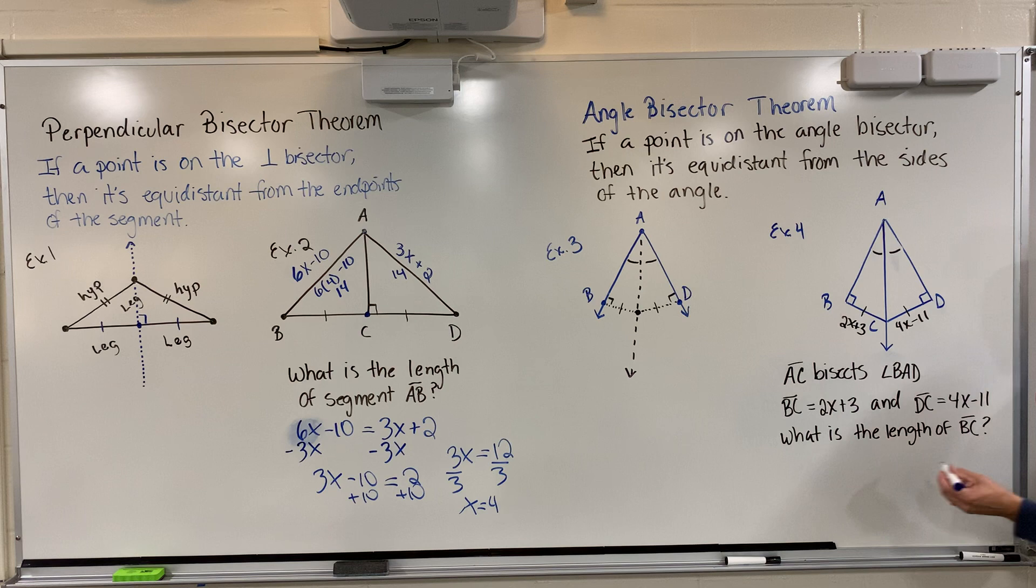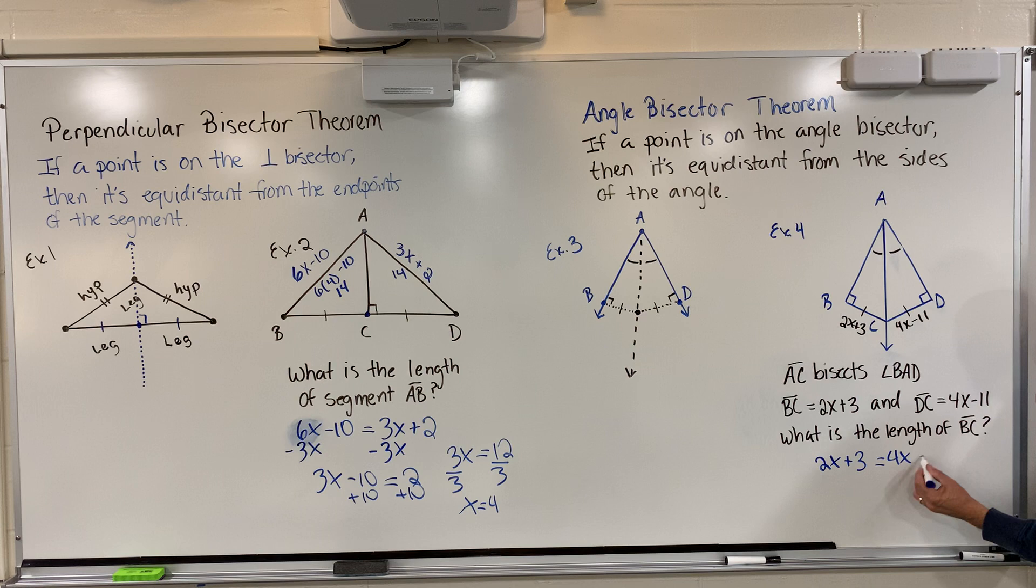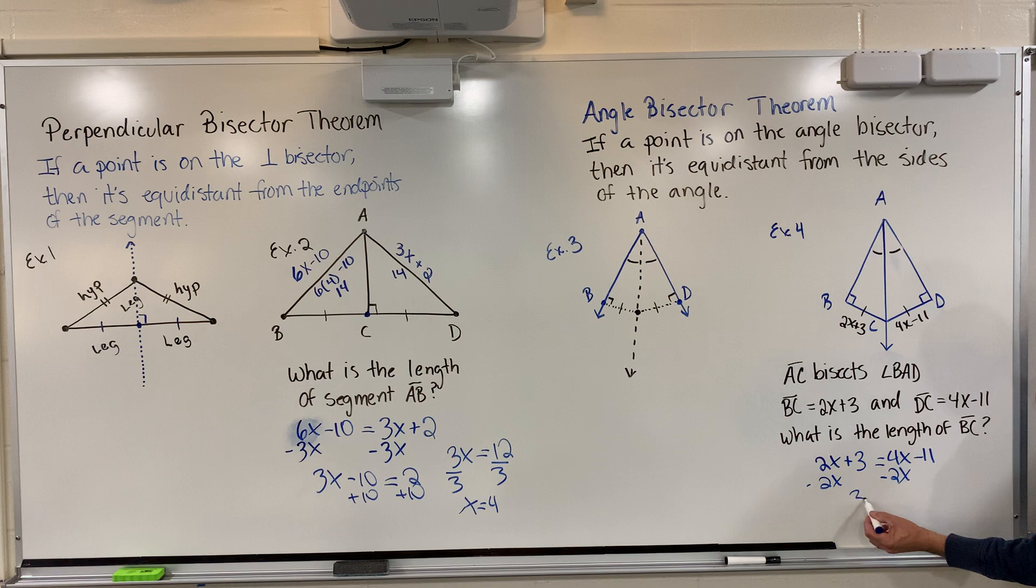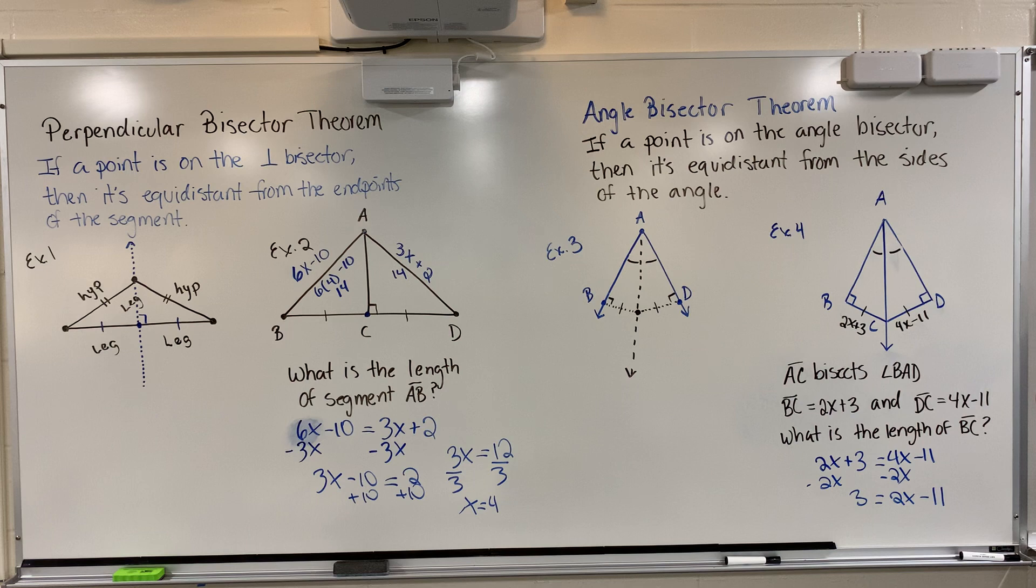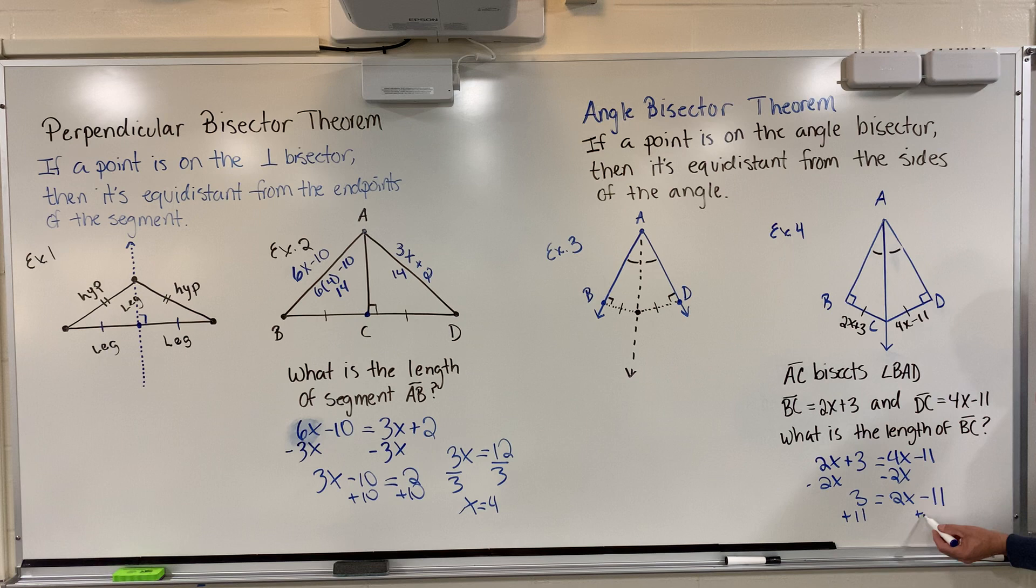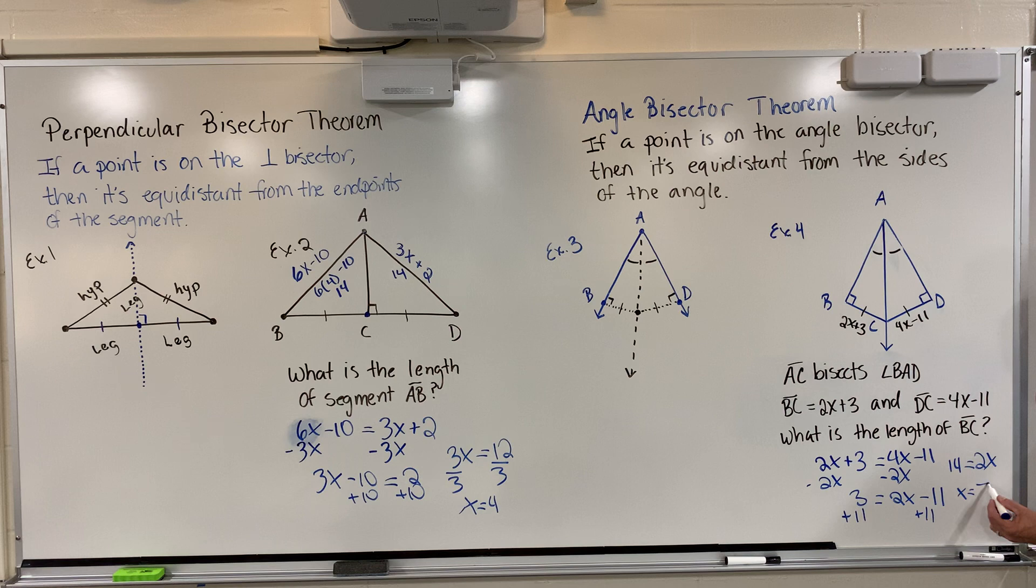Because I see these are equal, I can just go like this. If I add 11 over to both sides, I get 14 equals 2x. X is going to be the number 7.